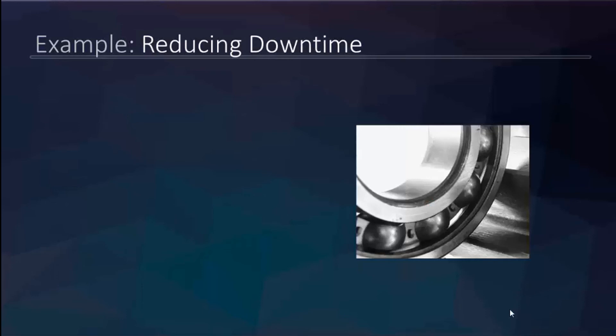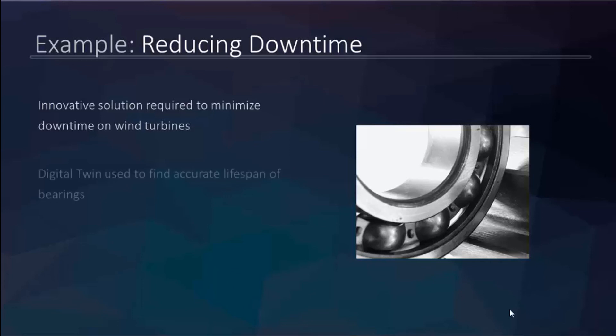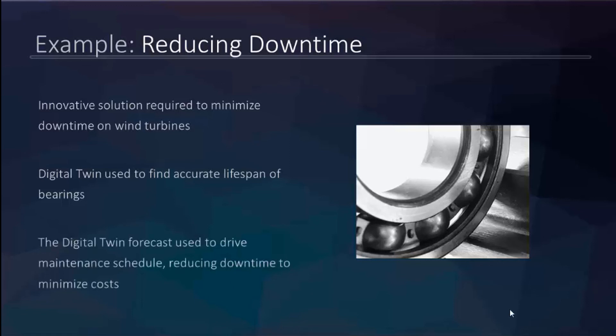The second example: we worked with a customer wanting to minimize downtime on wind turbine farms. We helped them create a model of how bearings behave in wind turbines, accounting for the many forces at play. This let us help them create an accurate, continuously refined maintenance schedule that reduced downtime — because each windmill is different, and having a maintenance schedule based on accurate physics-based information makes a huge difference when managing massive wind farms.